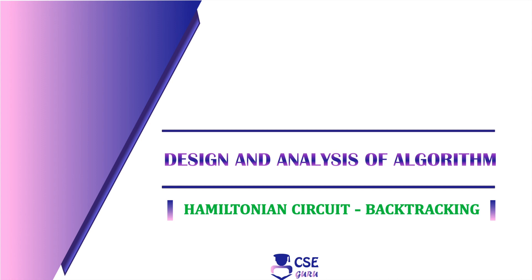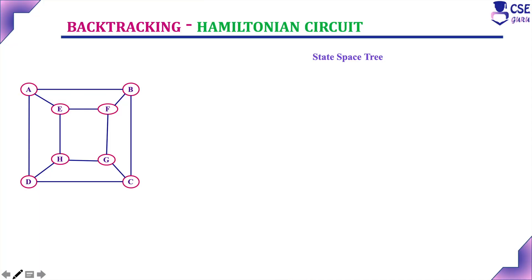Welcome to CSE Guru. In this session, we will discuss one more example to implement Hamiltonian circuit using backtracking technique. Already in the previous session, we have discussed what is Hamiltonian circuit and what is Hamiltonian path, how to implement Hamiltonian circuit using backtracking technique by constructing the state-space tree. With the same procedure, now we will discuss one more example to implement Hamiltonian circuit and this is the given graph.